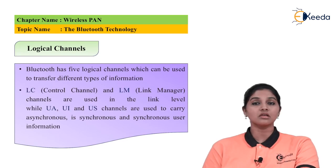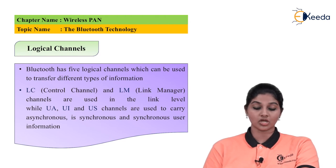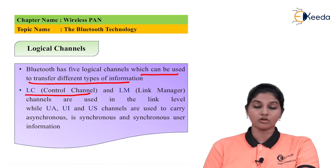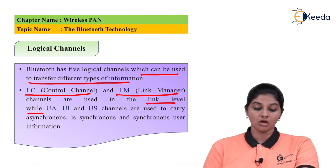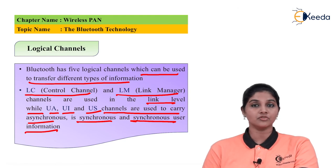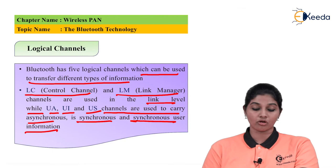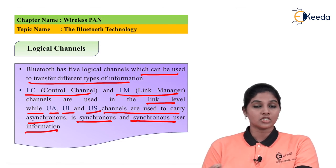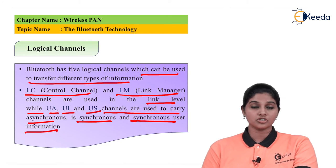Bluetooth has five different logical channels for transferring different types of information. The control channel (LC) and link manager (LM) are used at the link level. The UA, UI, and US channels carry asynchronous, isochronous synchronous, and synchronous user information respectively. These five logical channels — LC, LM, UA, UI, and US — are used for carrying different types of user information on the Bluetooth network.